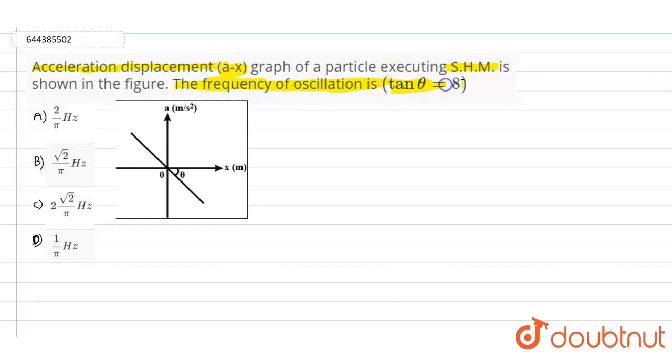The tan theta value is given as 8 directly. If you look into this particular graph, it's drawn between the acceleration versus displacement x in meters, with acceleration in meters per second squared.